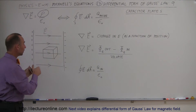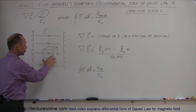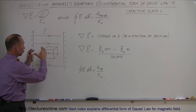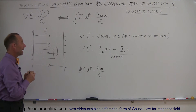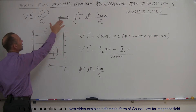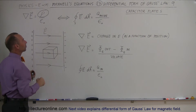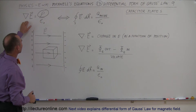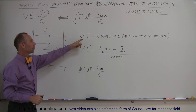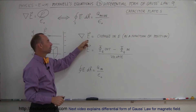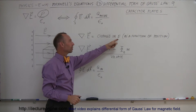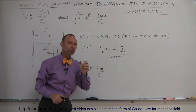Now let's say we build an imaginary cube in there. That cube could be considered a Gaussian surface, so let's take a look at the two forms of Gauss's law. Let's start with the differential form, which says that the divergence of the electric field is equal to the change in the electric field as a function of position.